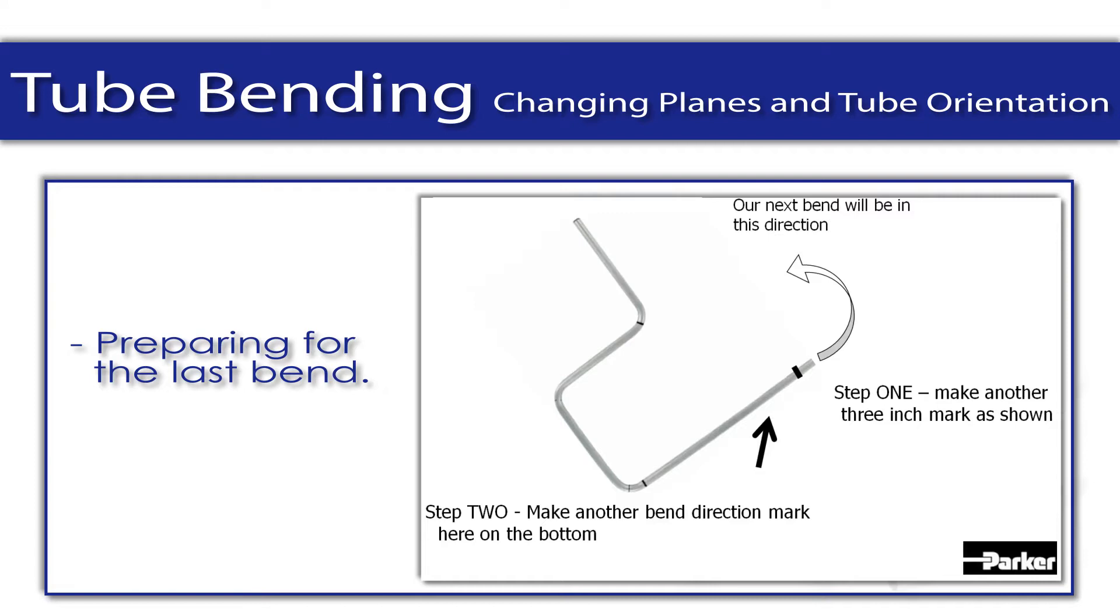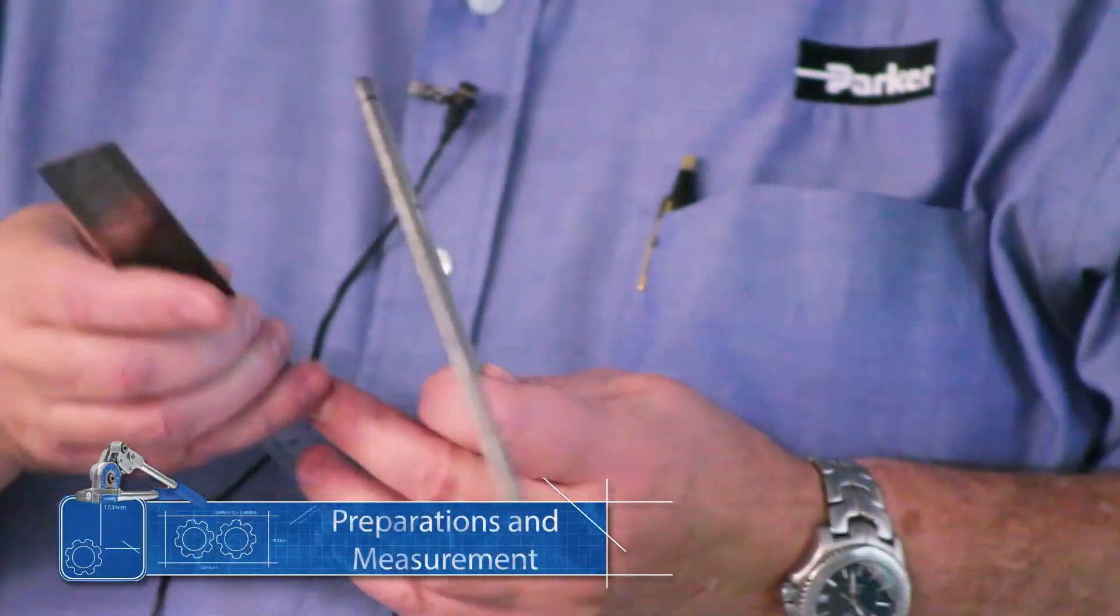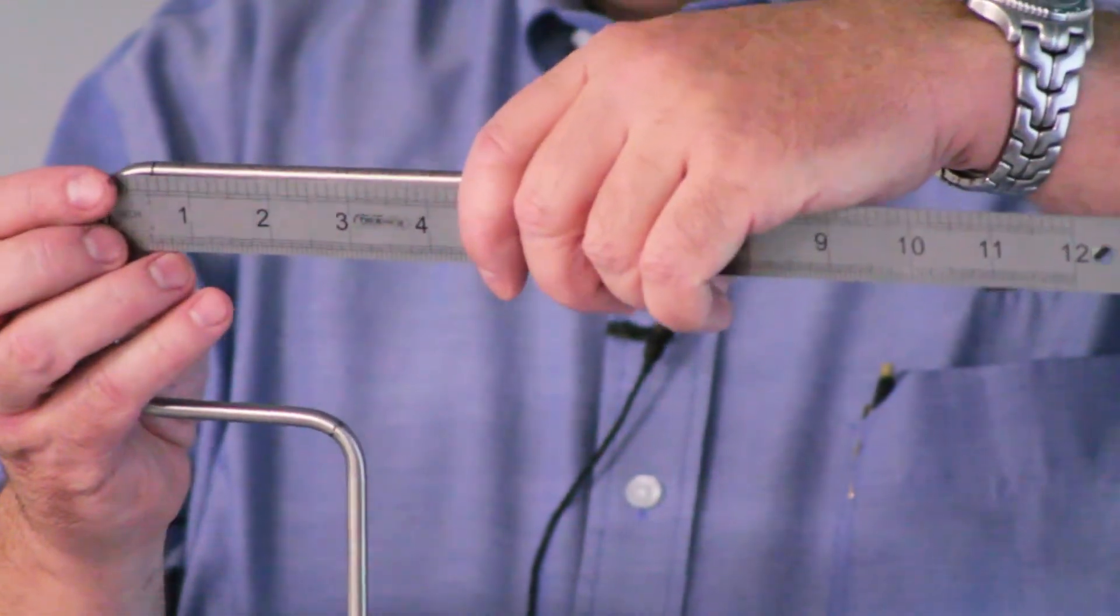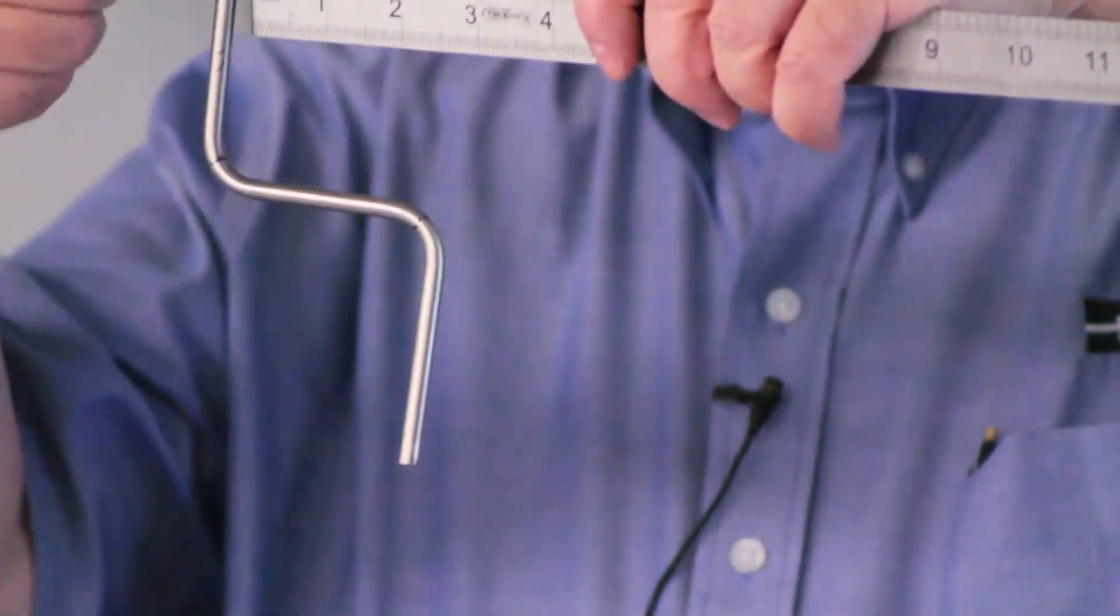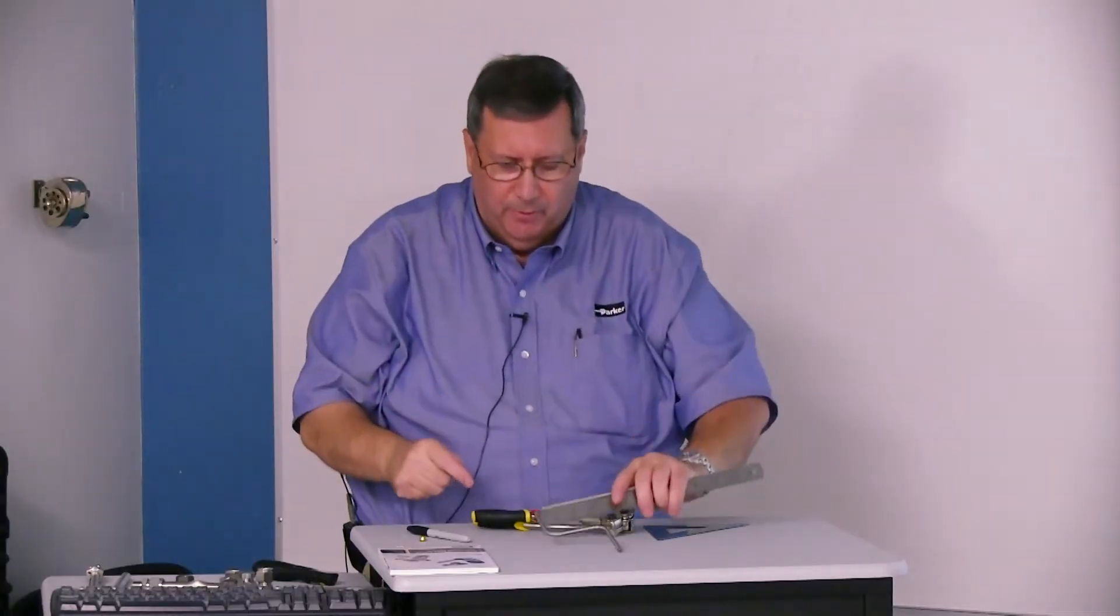But the next thing we want to do is make another three-inch mark. We want to take our ruler, again, line up like we've done the past two times - line up that edge with the center line of this third leg and mark three inches just like we've done before.